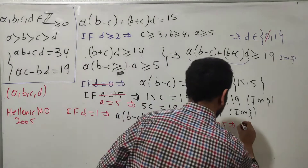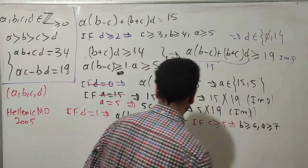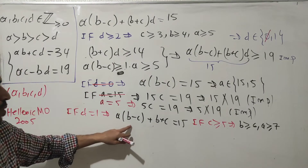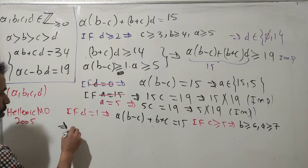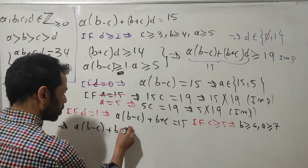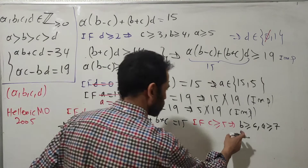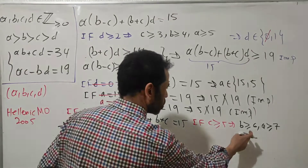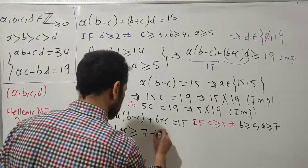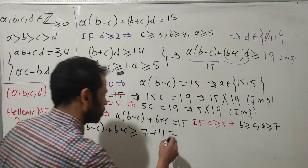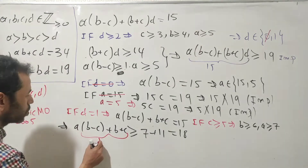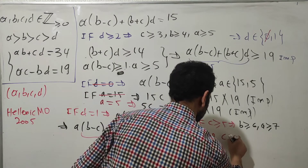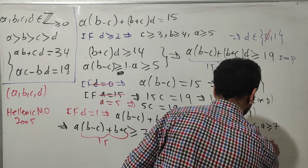Take another assumption: if c ≥ 5, then immediately b ≥ 6 and a ≥ 7. Adding: (b + c) + a(b − c), where b − c ≥ 1 and a ≥ 7, gives a(b − c) ≥ 7, and b + c ≥ 11, so the sum is at least 18. But this sum must equal 15, and 15 < 18, which is impossible. Therefore c belongs to {0, 1, 2, 3, 4}.